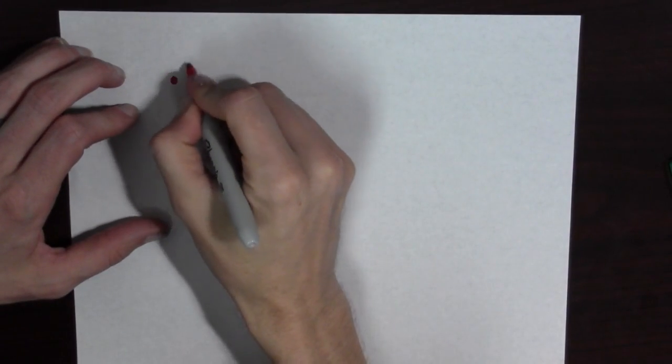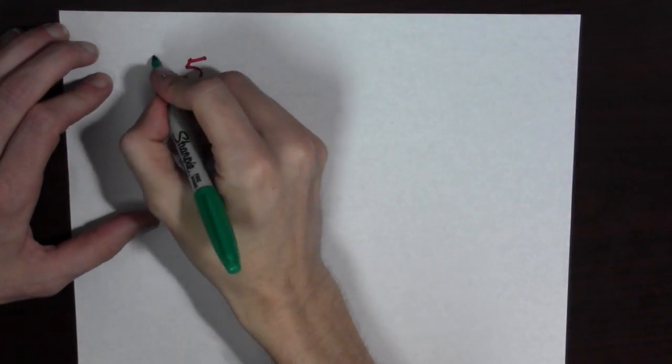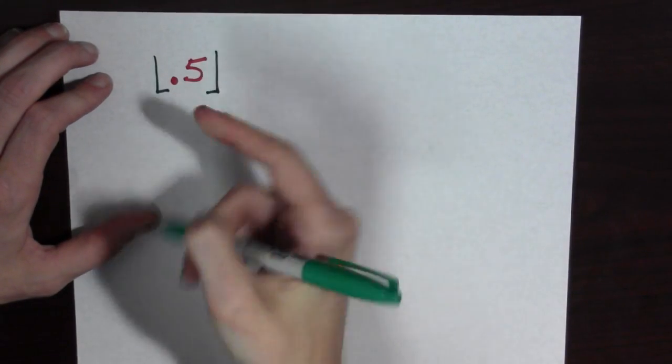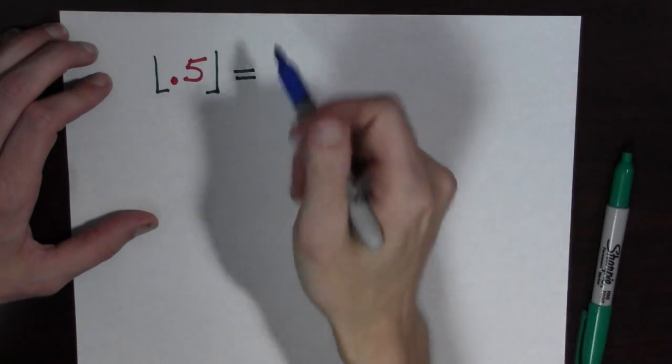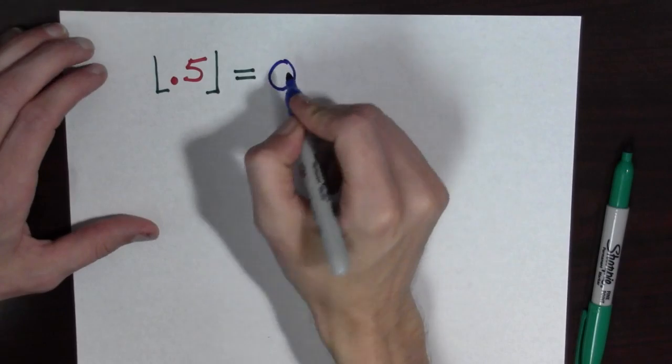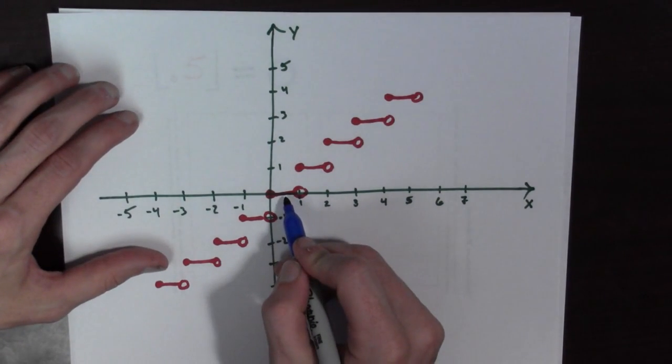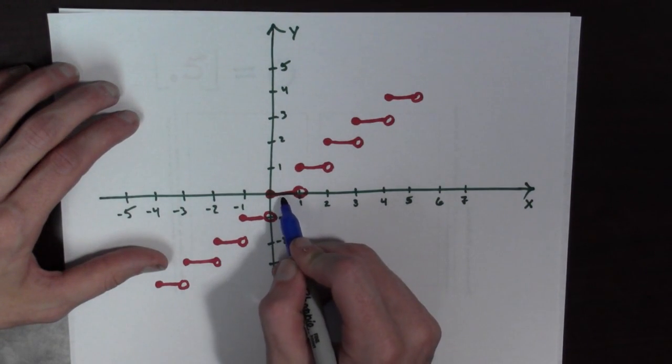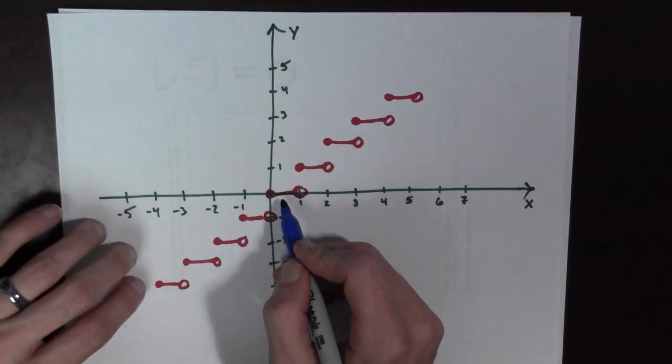Consider the number 0.5. When we evaluate the Greatest Integer Function at 0.5, we get 0. Because 0 is the Greatest Integer that's less than or equal to 0.5. Let's look at the graph again. So, see, 0.5 has a y value of 0. So, the Greatest Integer sends it to 0.